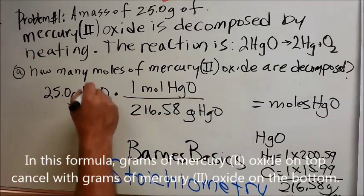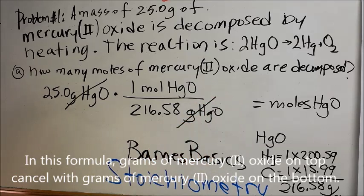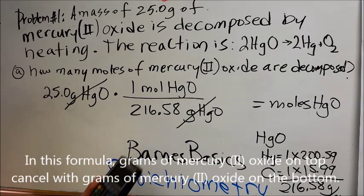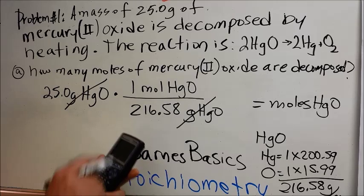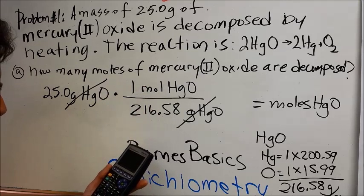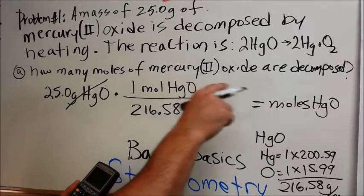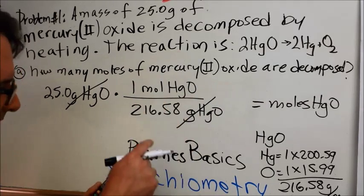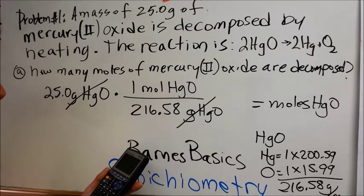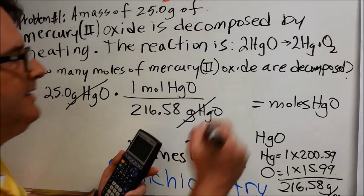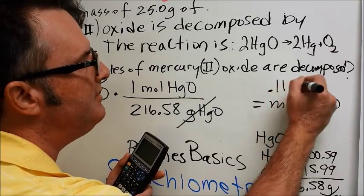In this equation, grams of mercury cancel with grams of mercury, and so 25.0 multiplied by 1 over 216.58...